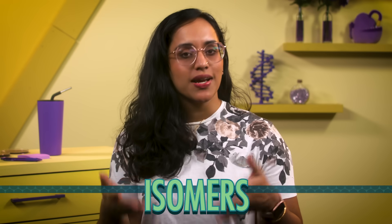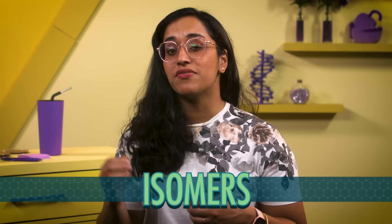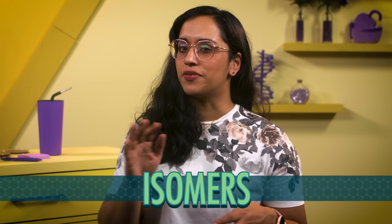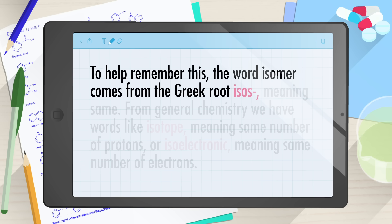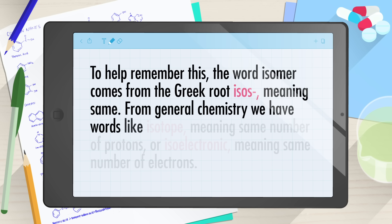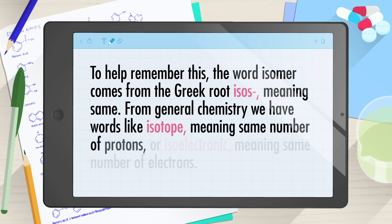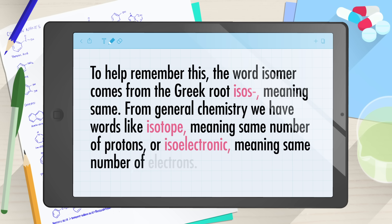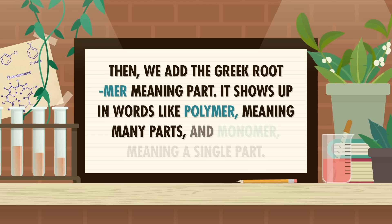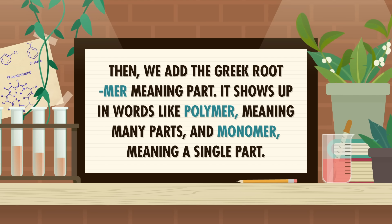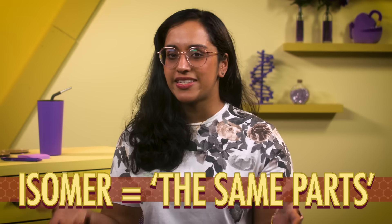It's pretty clear that the bonds of a molecule affect its structure. We use the word isomers to describe molecules that have the same molecular formula but different arrangements of atoms. The word isomer comes from the Greek root isos, meaning 'same,' combined with the root mer, meaning 'part' — so isomer means 'the same parts.' Two major kinds of isomers in organic chemistry are constitutional isomers, which are more common, and geometric isomers.